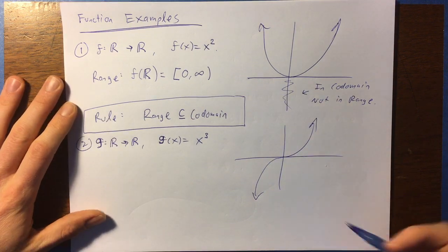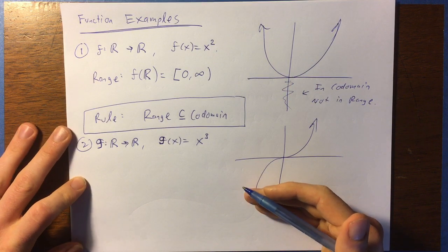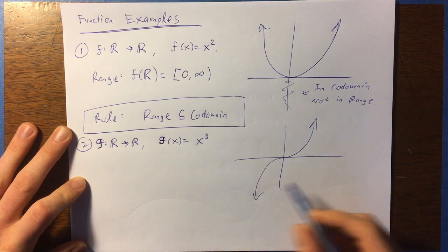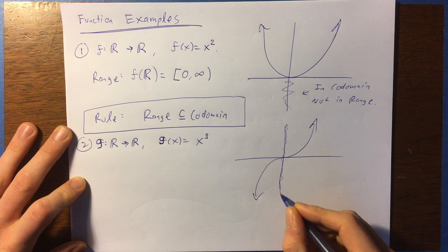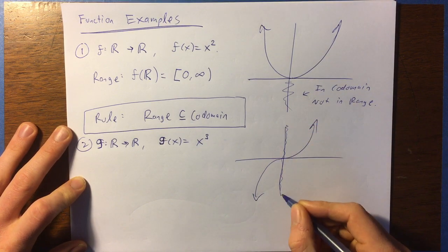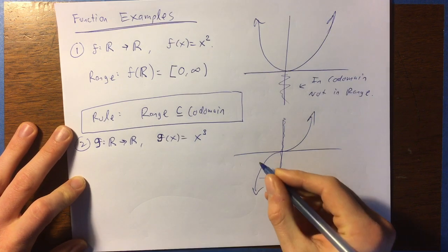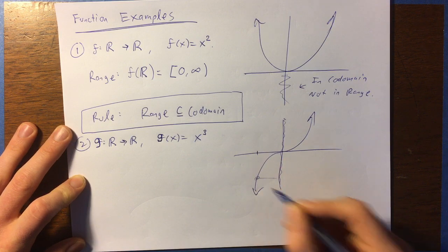Okay, so let's contrast that now with the second example. With x cubed, things are a little different. We have the entire real number line here, and no matter what real number you pick, there's going to be some input that is going to produce that output, right?